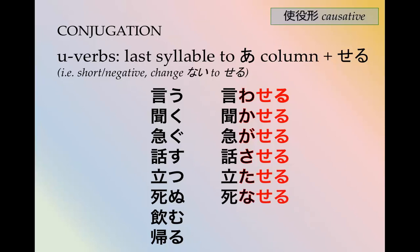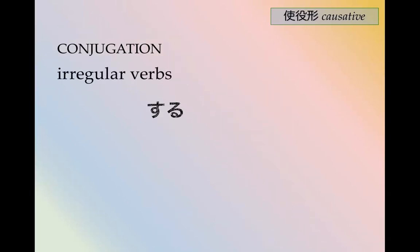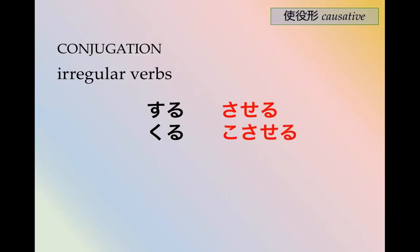死ぬ、飲む、帰る follow the same u-verb pattern. Irregular verbs: する and くる become させる and こさせる。